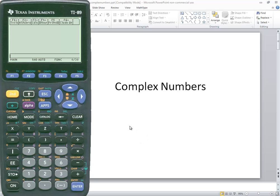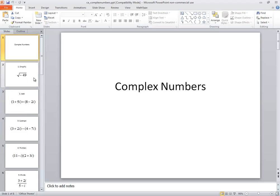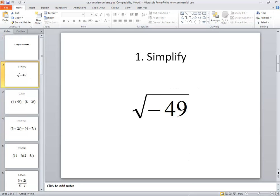Let's take a look at complex numbers on a TI-89 calculator. Our first one is the square root of negative 49.